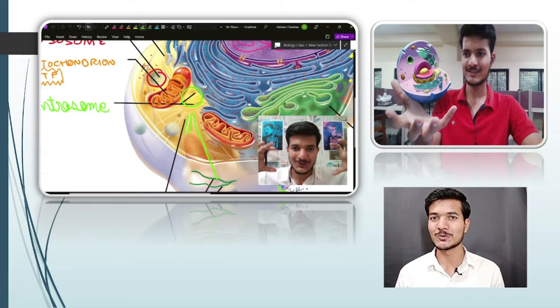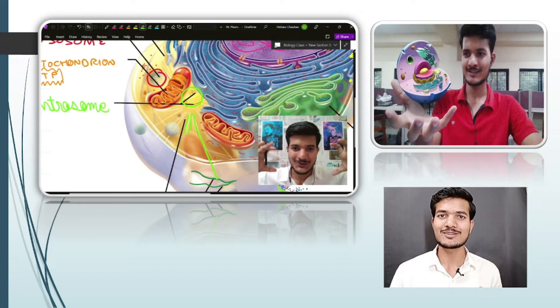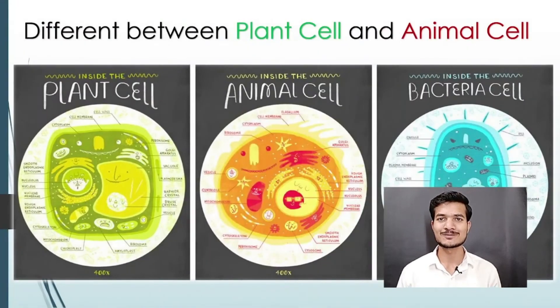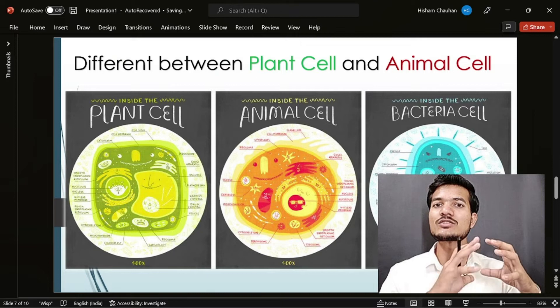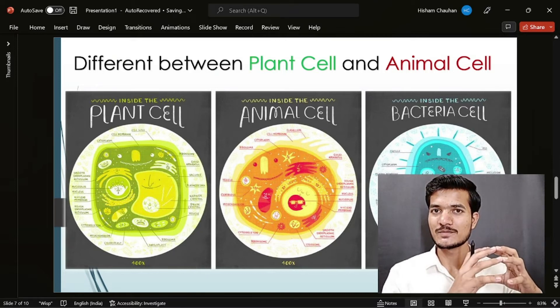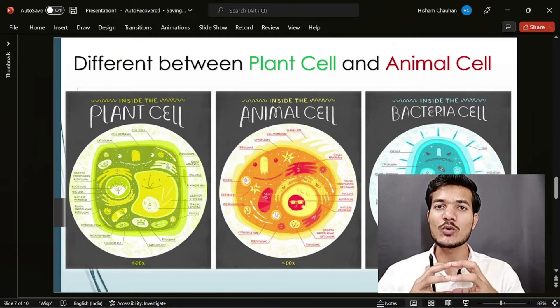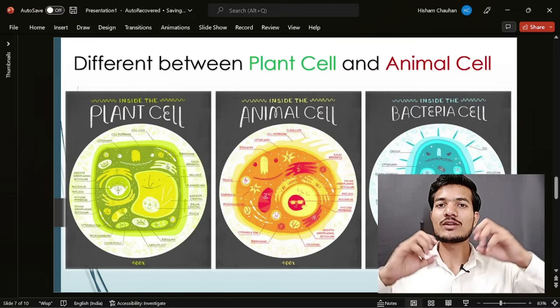Let's open our books. In the previous session, we have studied the structure of a cell. In this session, we are going to study about the differences between a plant cell and the animal cell.